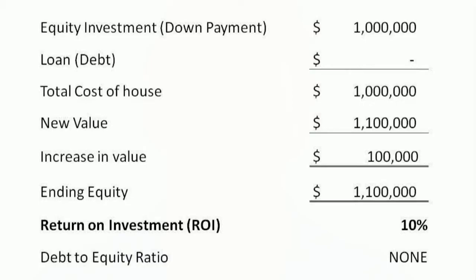For example, let's say you bought a house for $1 million and paid cash. If the house increased in value up to $1.1 million, you would have made 10% on your equity investment of $1 million.